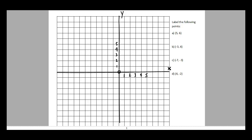What happens when we go left or down? Since this is a number line going left and right, to the left of the origin would be negative one, negative two, negative three, and so on. Going down the y-axis would be negative one, negative two, negative three, negative four, negative five, and so on.